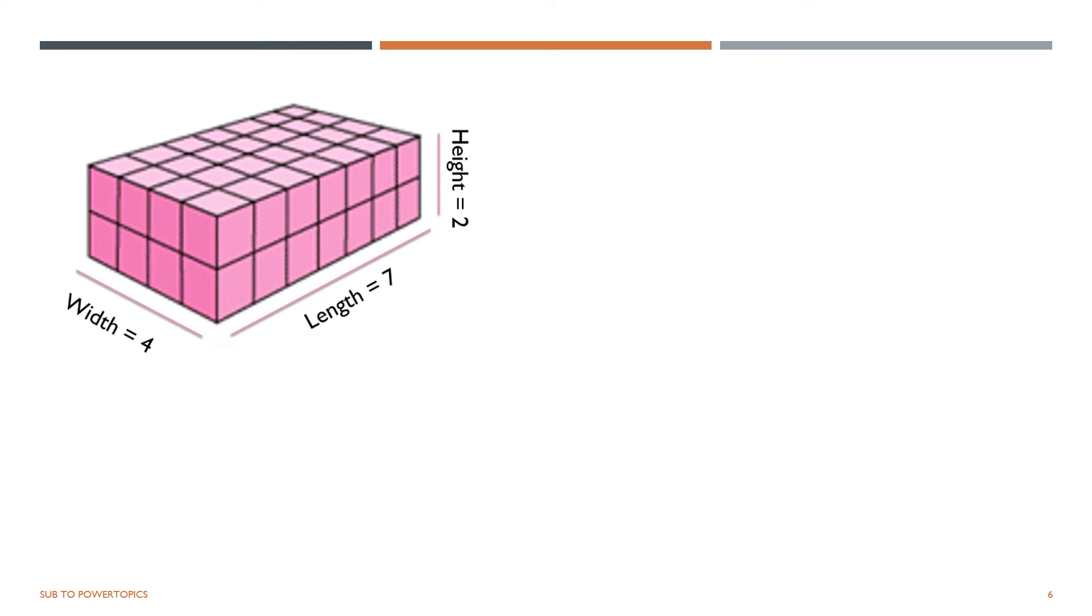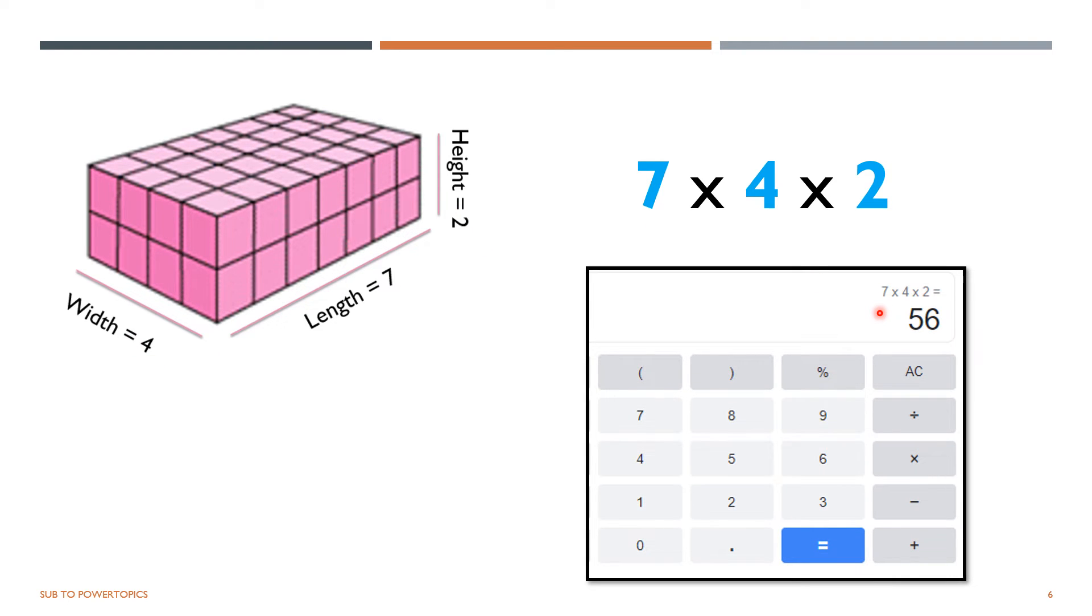So let's multiply them all together. 7 times 4 times 2 is equal to 56. But we still aren't done yet. We are forgetting something. It is the unit, which is centimeter cube. So never forget the unit.